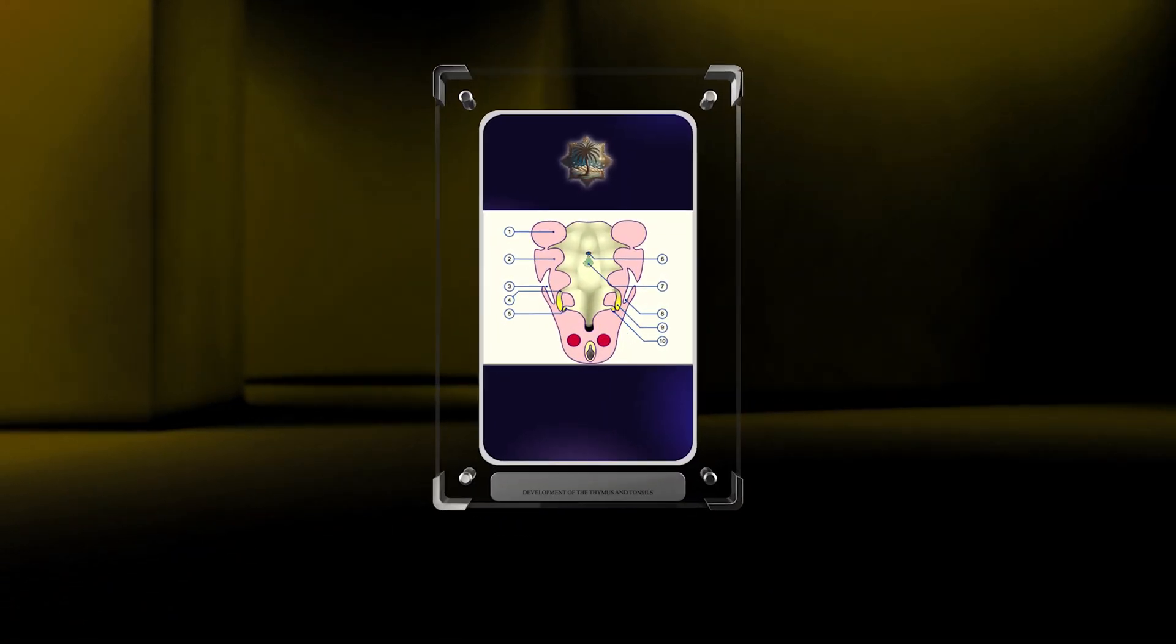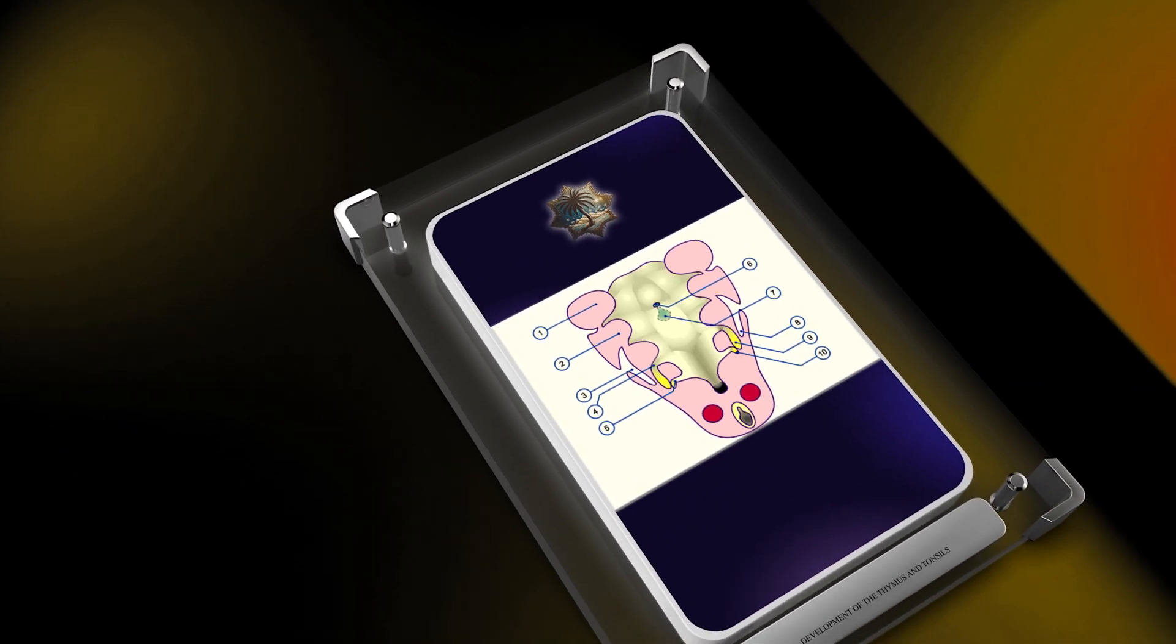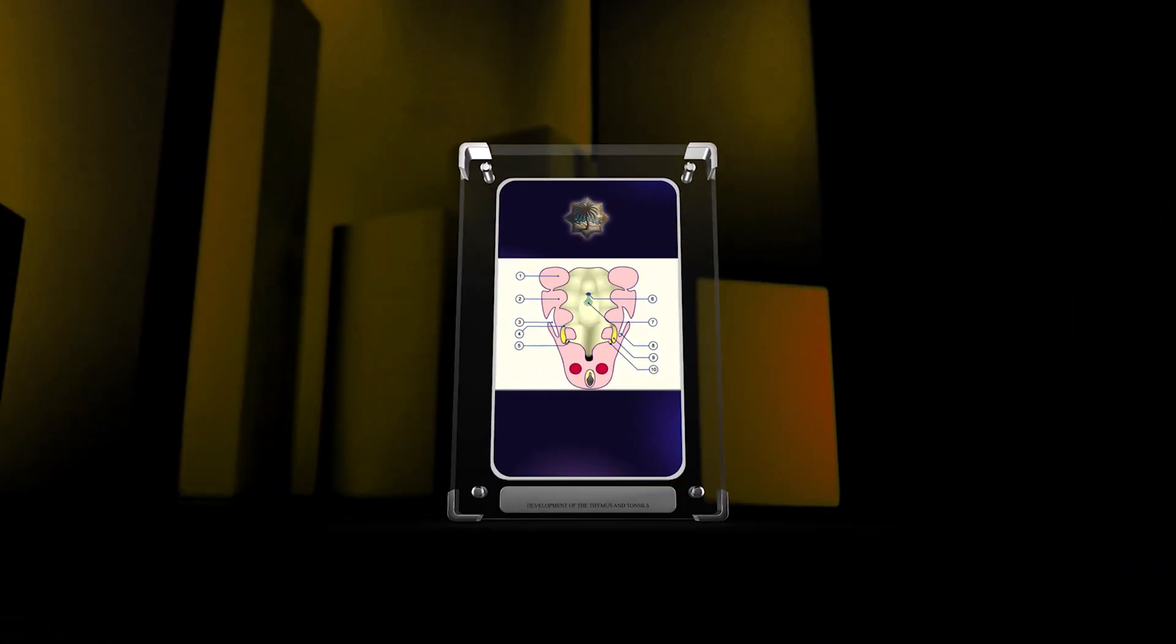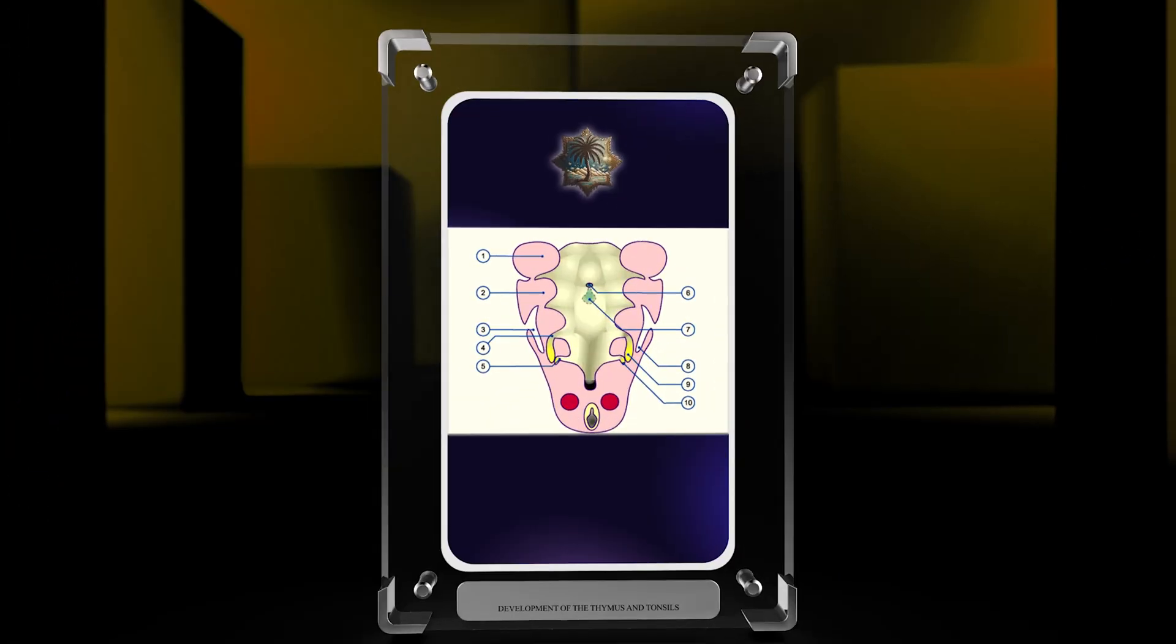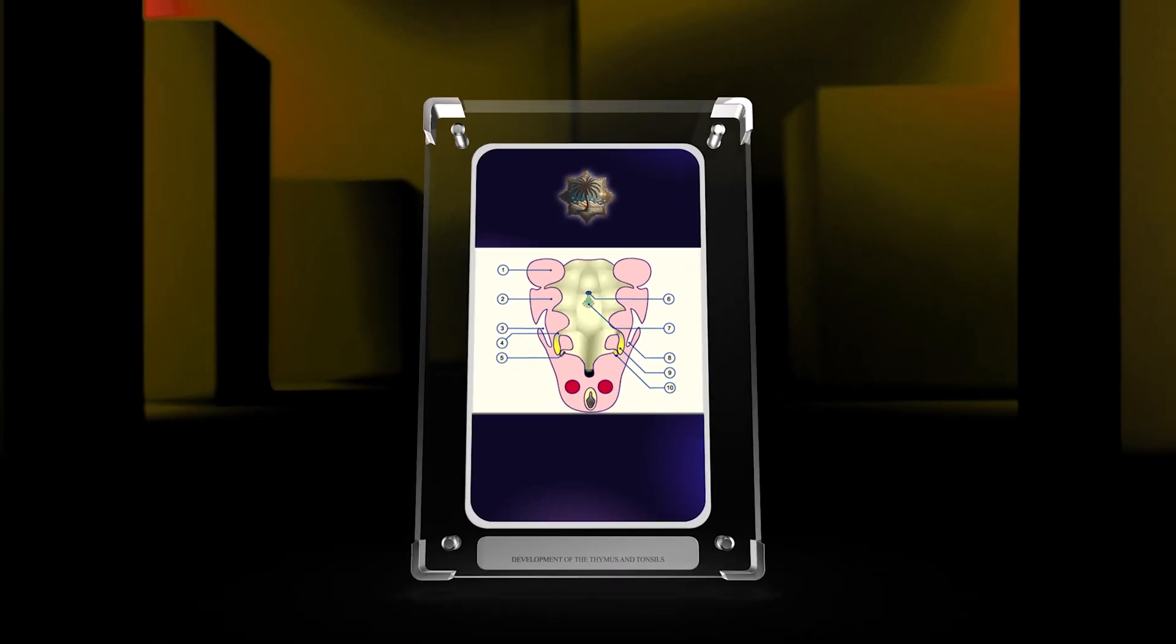In this video, we will explore the development of the thymus and tonsils, key organs in our immune system. We will discuss their origins from the third pharyngeal pouch and pharyngeal arches, and the important role of different cells in signaling molecules.